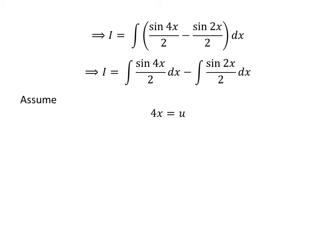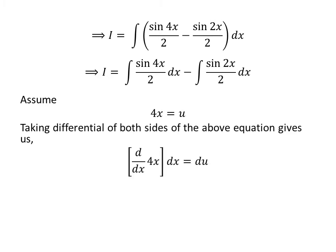Let us solve the integral of sine of 4 times x upon 2 with respect to x. I have applied the substitution method to solve this integral. Let us assume 4 times x is equal to u. Differentiating both sides gives us the derivative of 4 times x with respect to x, times differential of x, equals differential of u. As the derivative of 4 times x is 4, so 4 times dx equals du.